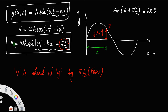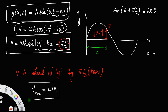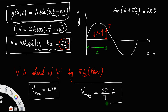We have v = ω·a·cos(ωt − kx). In order to have the maximum velocity v_max, this cos(ωt − kx) must equal 1, so the maximum velocity will be ω·a. Or, since ω = 2π/T, we have v_max = (2π/T)·a.